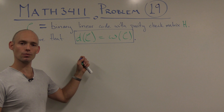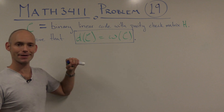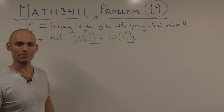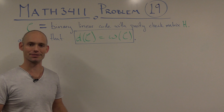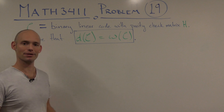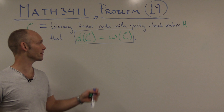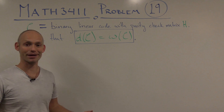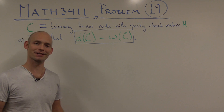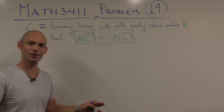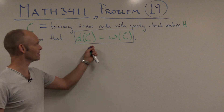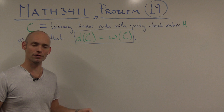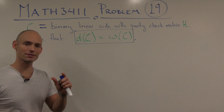So first of all, what are these two things? Well, the minimal distance of C, or the minimal Hamming distance, is the minimal Hamming distance of any two distinct vectors in C. Choose any two distinct vectors in C, look at their Hamming distance, and then try to find when that distance is smallest.